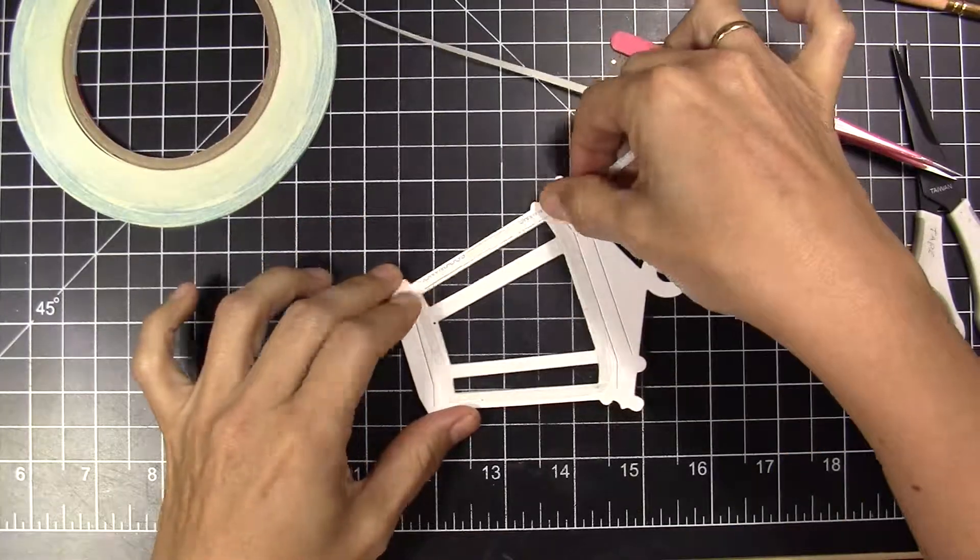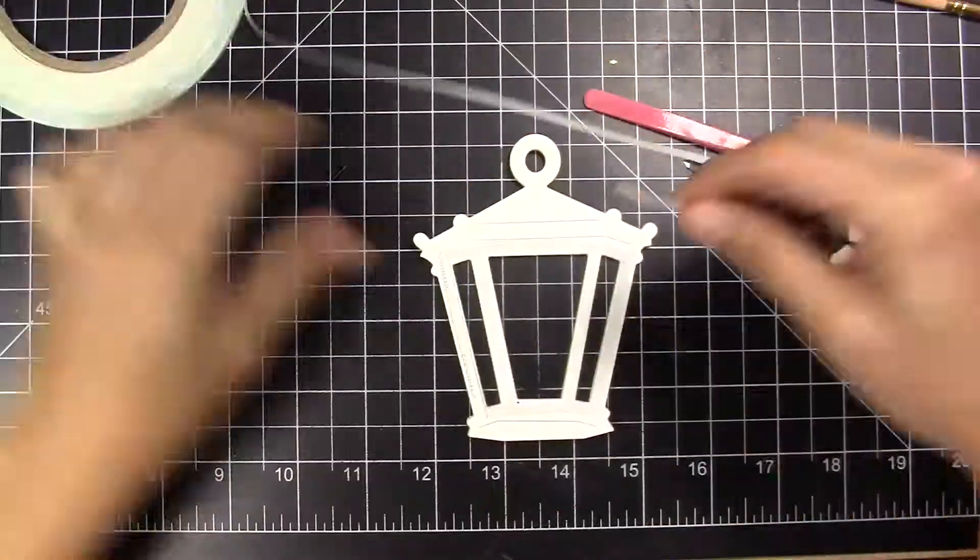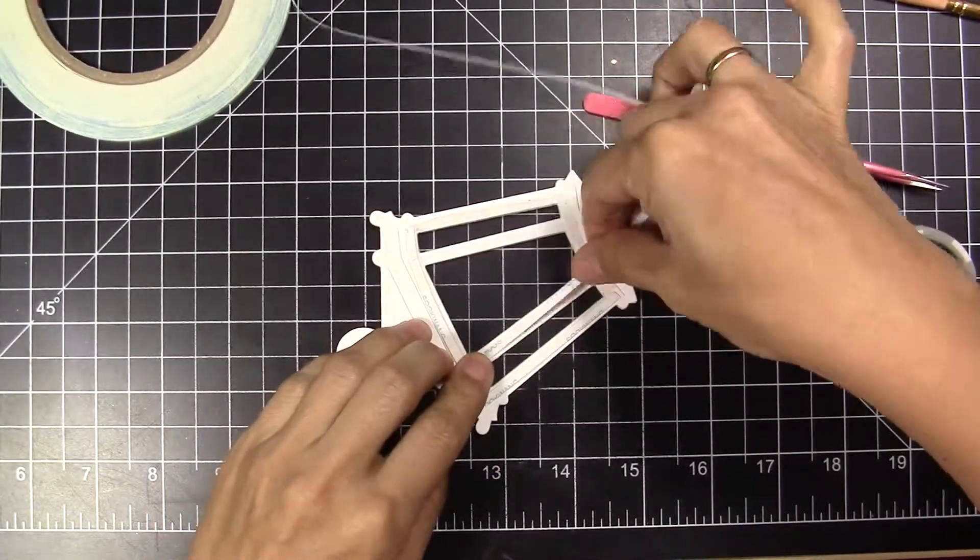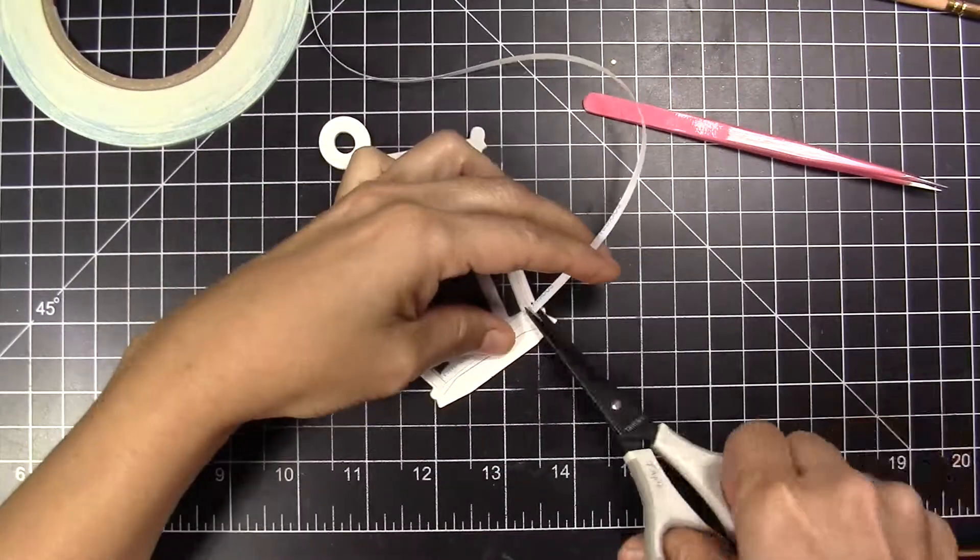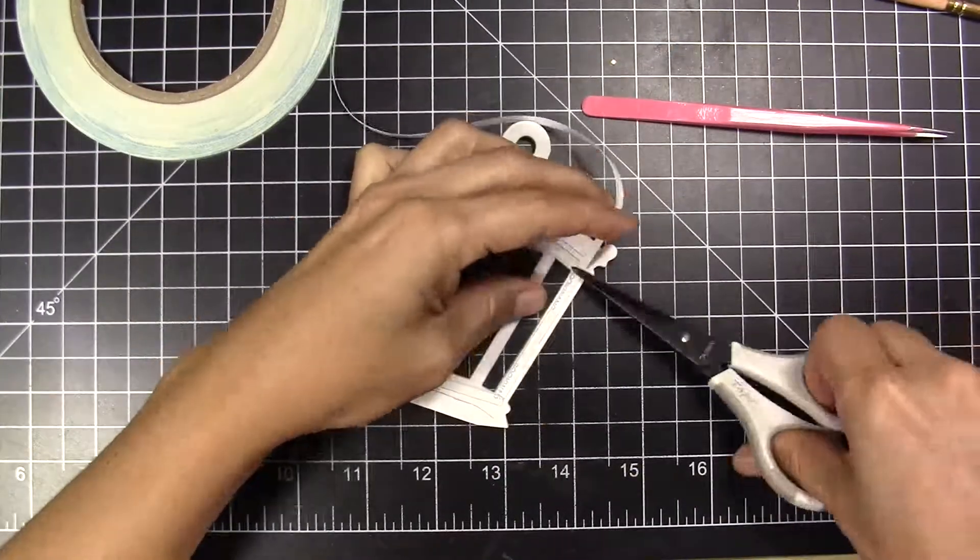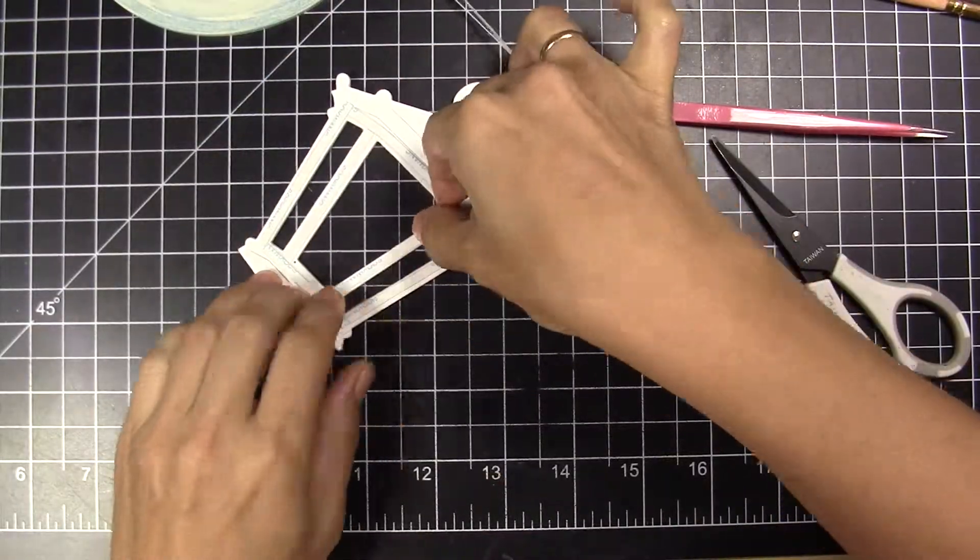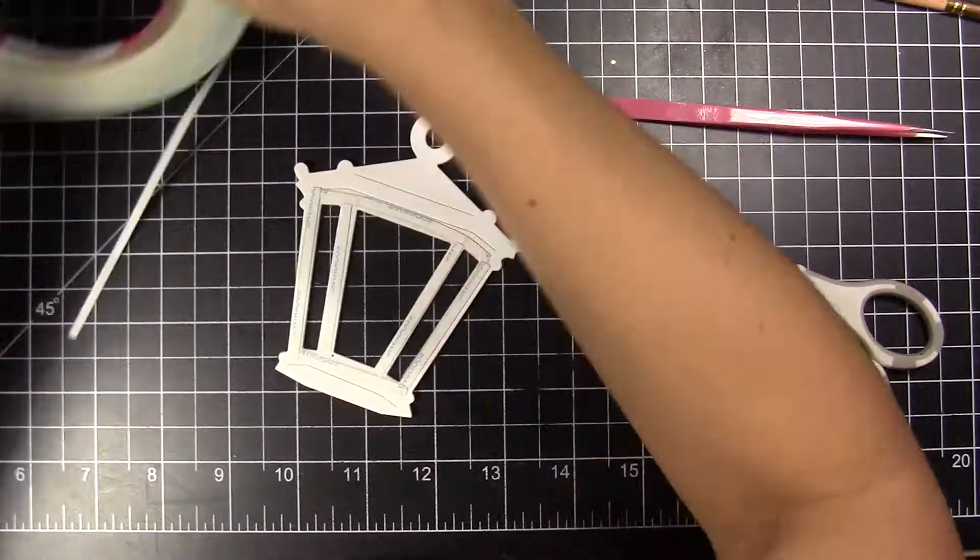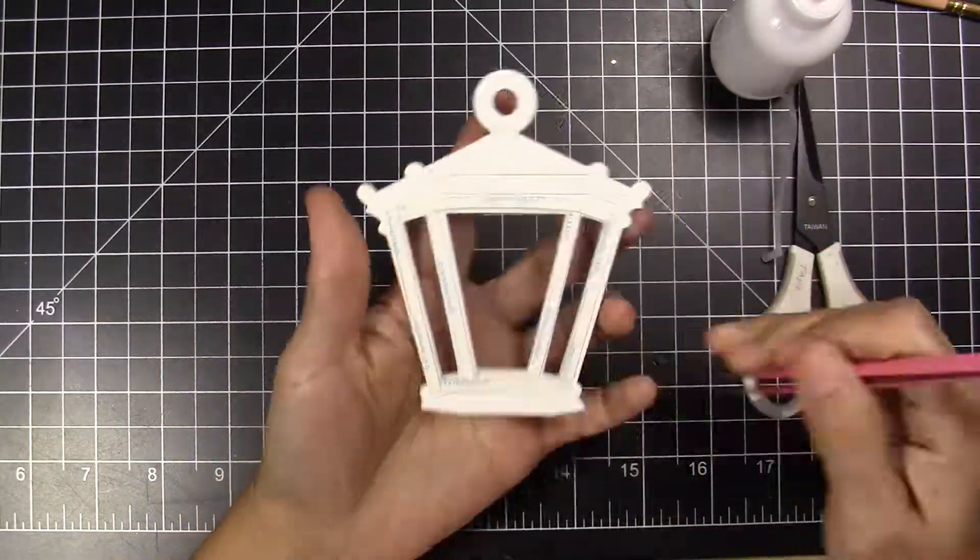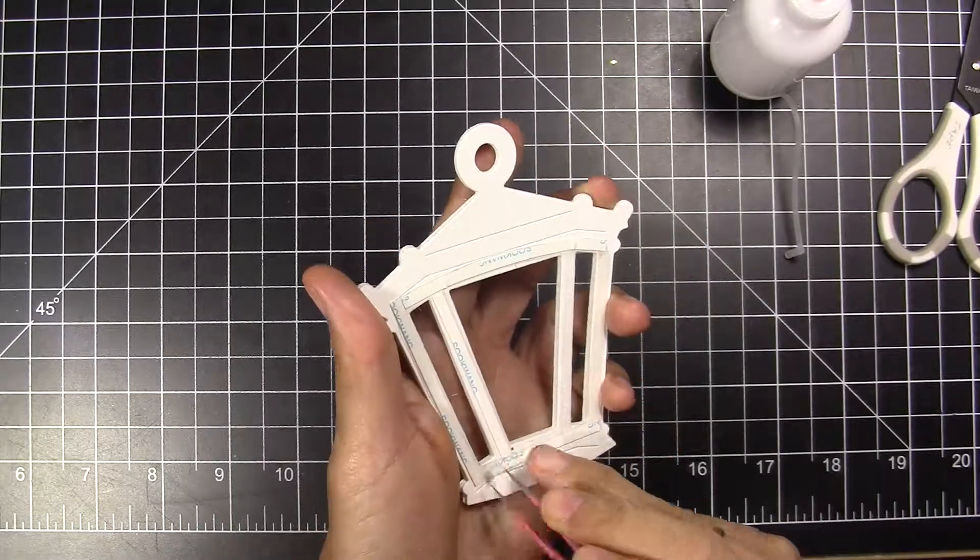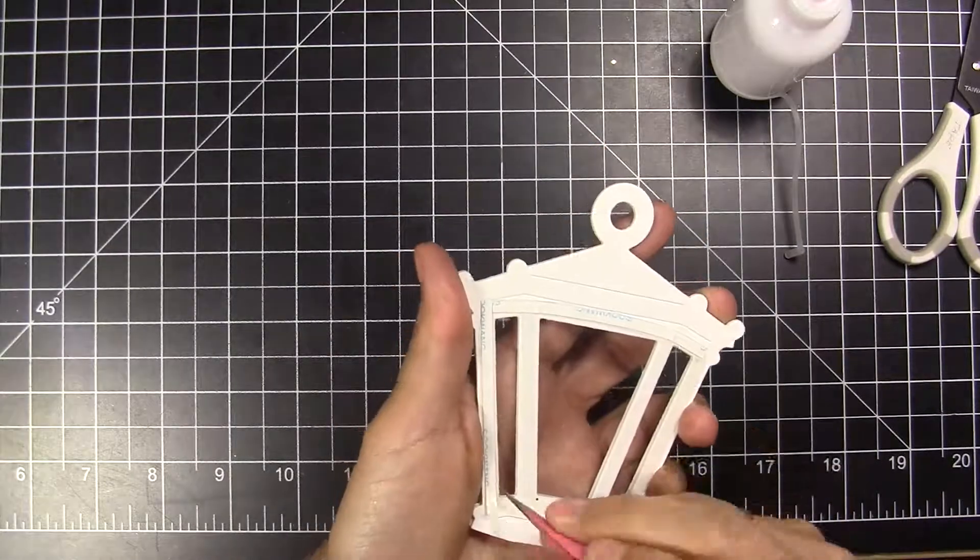Now that my acetate is on the lamp, I'm going to glue the final piece of the lamp. I cut one more lamp in gold cardstock paper and I'm going to glue it on top of the acetate using elastic tape, and on the white cardstock paper I'm going to use only liquid glue.